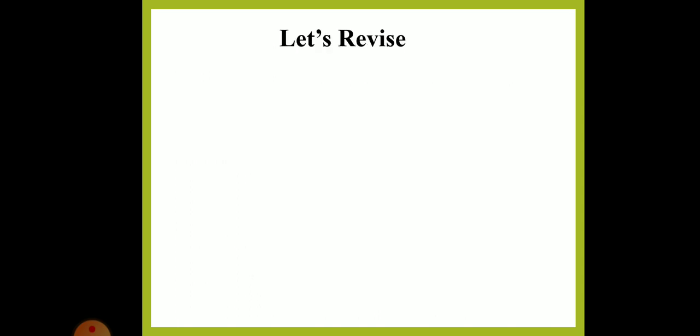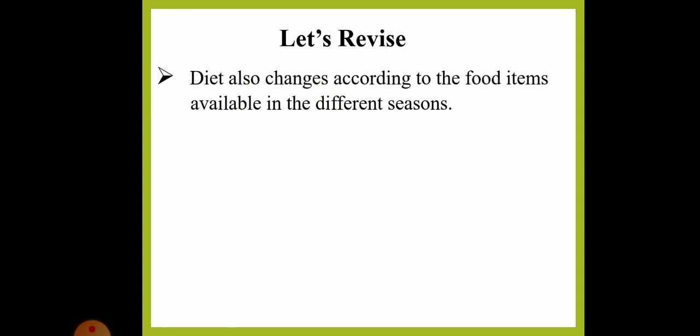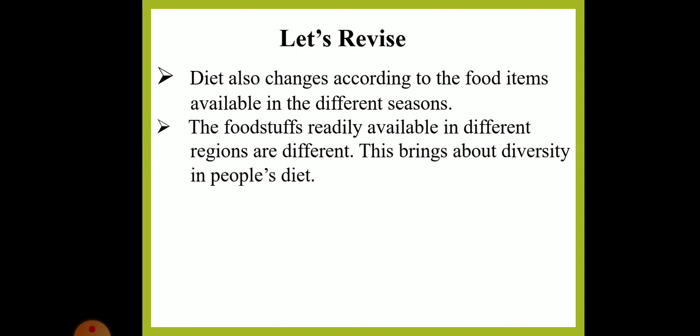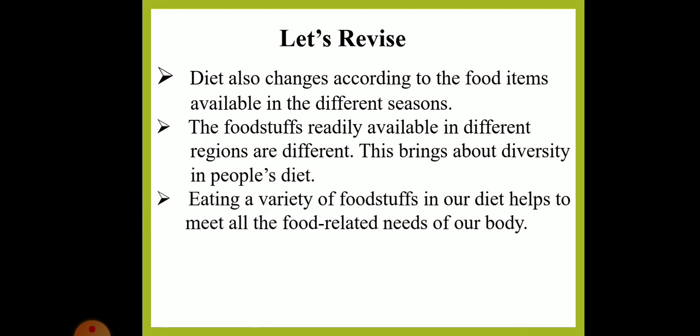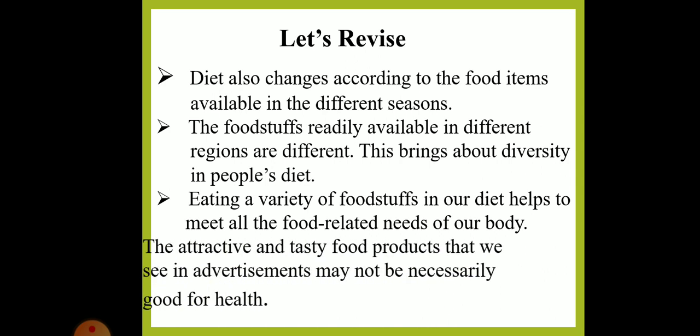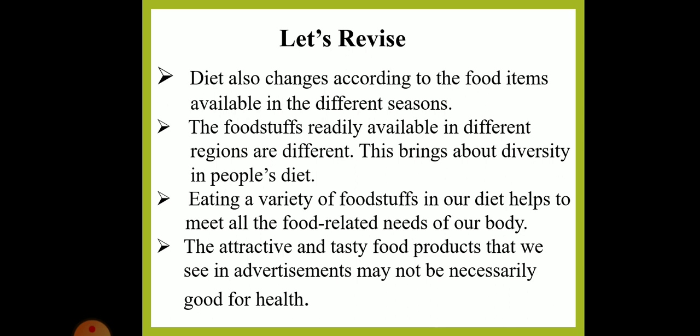Let us revise what we have studied today. Diet also changes according to the food items available in different seasons. A variety of dishes are prepared depending on the season because particular vegetables and fruits are available in that particular season. The foodstuffs readily available in different regions are different, and this brings about diversity in people's diet. Eating a variety of foodstuffs in our diet helps to meet all the food-related needs of our body. The attractive and tasty food products that we see in advertisements may not necessarily be good for health. We should not get tempted by such advertisements.